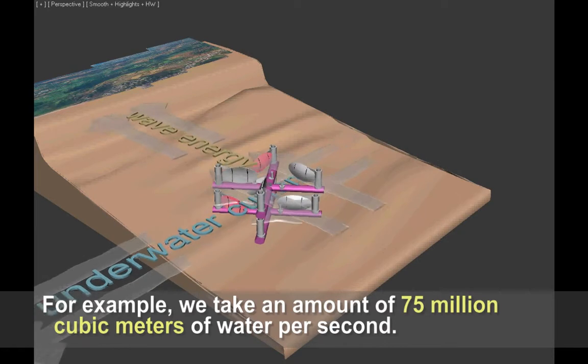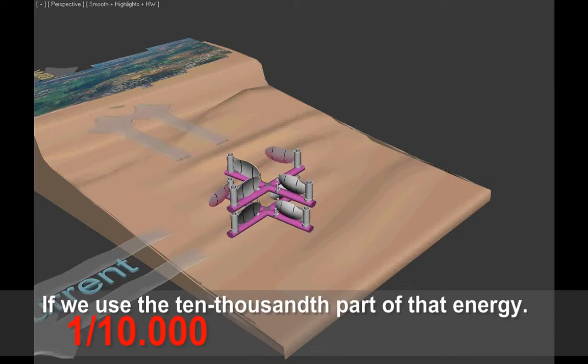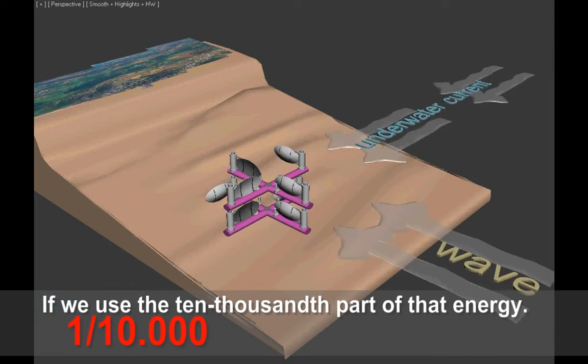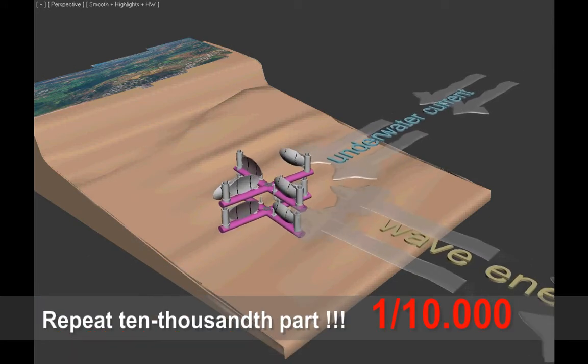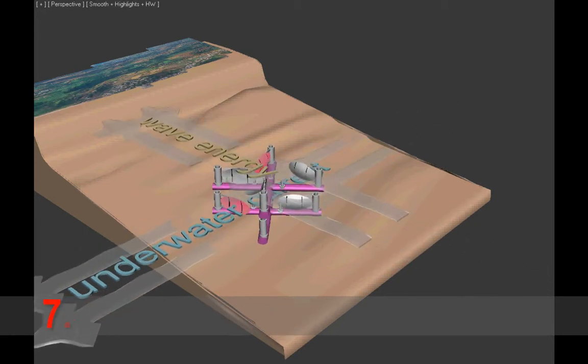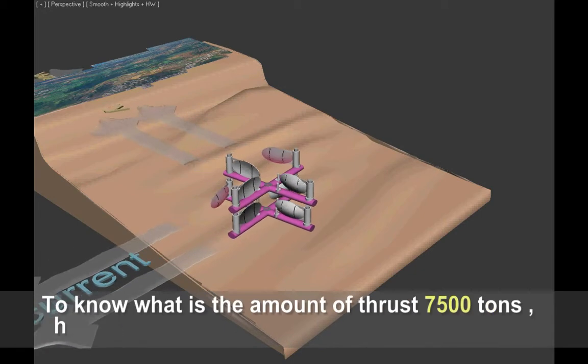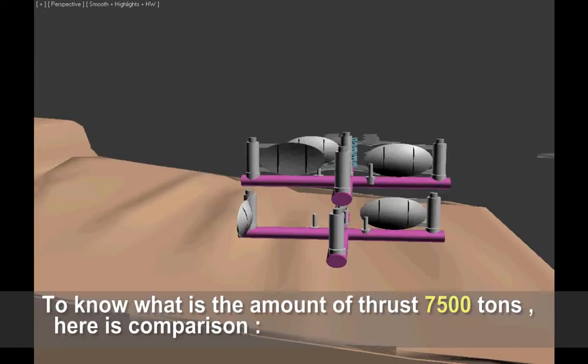For example, we take an amount of 75 million cubic meters of water per second. If we use the 10,000th part of that energy, repeat, 10,000th part, we get the thrust of 7,500 tons. 7,500 tons.